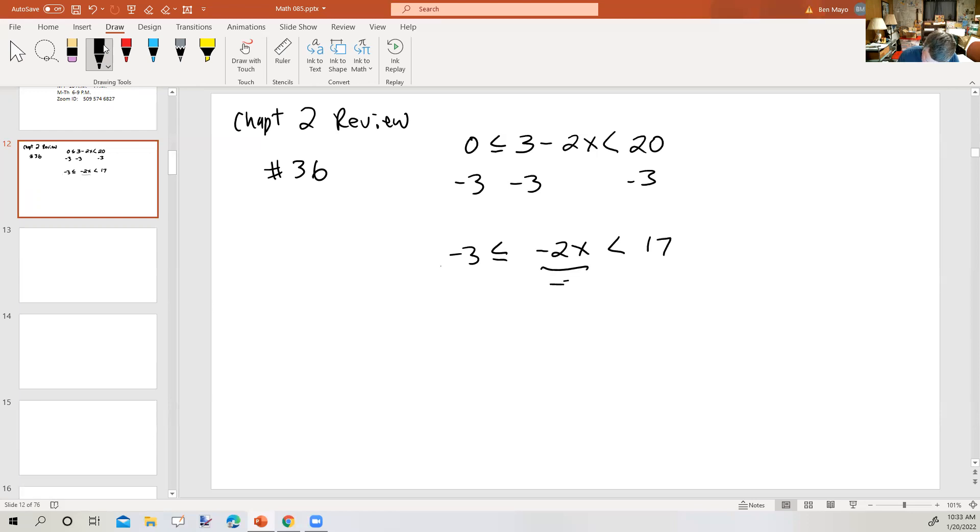This gives me negative 3 less than or equal to negative 2x less than 17. Next, I'm going to divide each piece by negative 2. On the left, this gives me 3 halves. In the middle, I get x. On the right end, I get negative 17 over 2. But because I divided by a negative number, I'm going to change the direction of both inequalities. But now I have a statement that goes from largest to smallest and it needs to go from smallest to largest. So I'm not going to switch the signs, I'm basically going to turn the whole thing around.